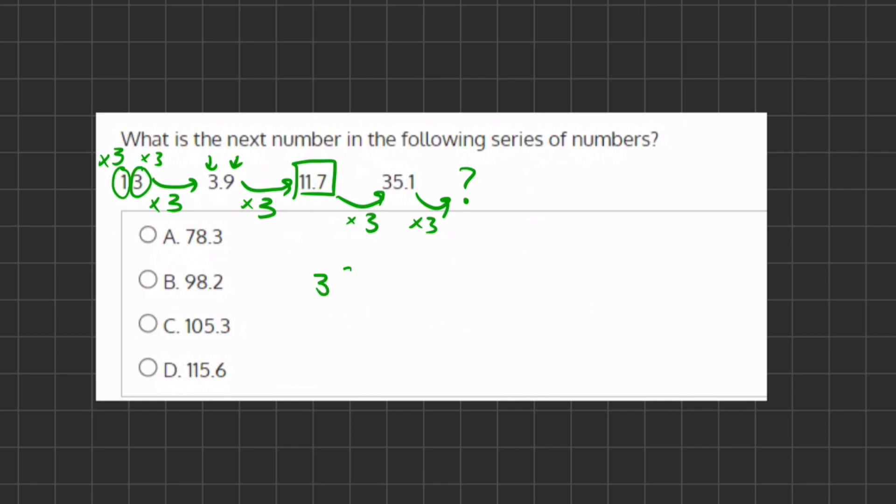So we have 35 times 3, plus 0.1 times 3. Now 35 times 3 gives us 105, plus 0.1 times 3 gives us 0.3. Now when we add these two, we get 105.3, and that will be the next number in our series, which is answer C. So that will be our final answer.